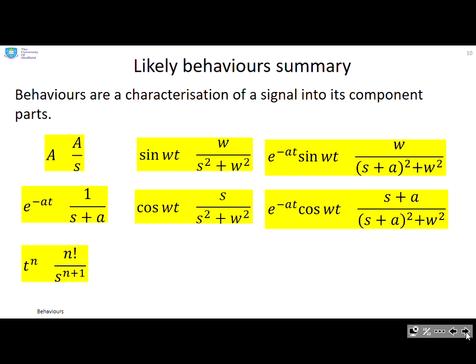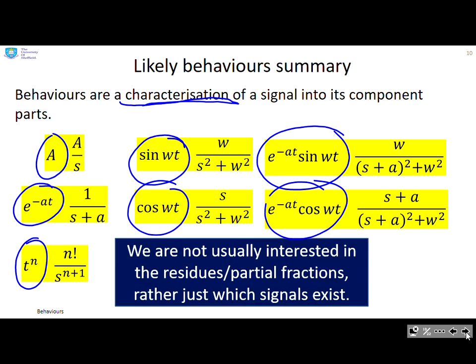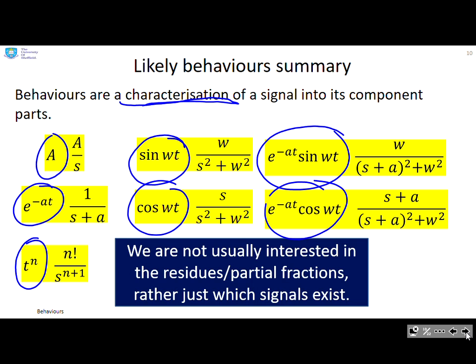So having established where the behaviors come from, what do we mean by that? Behaviors are a characterization of a signal into its component parts. Those component parts might be constants, exponentials, polynomials, sine waves or exponentials times sine waves. So we want to characterize the behavior of the system into which of these components appear in the output. The good thing here is we're not usually interested in the residues or partial fractions in detail. All we want to know is which of these signals exist within the output.